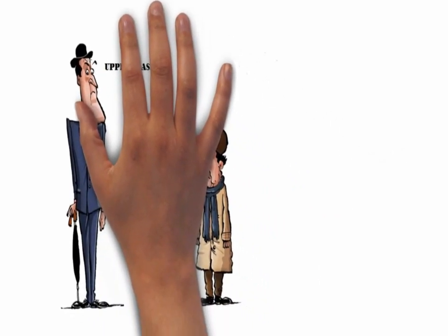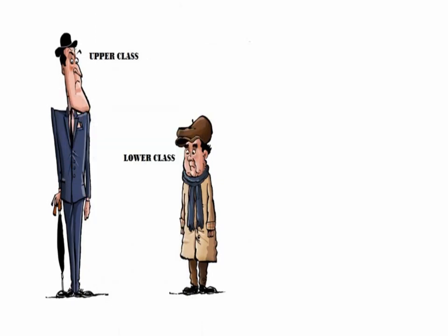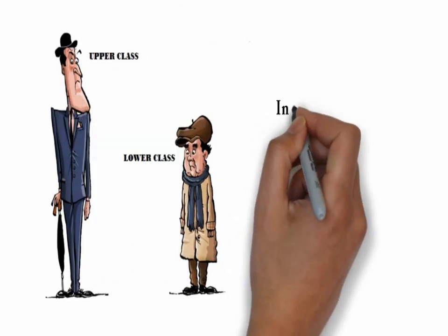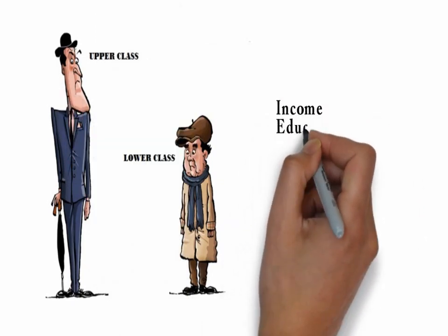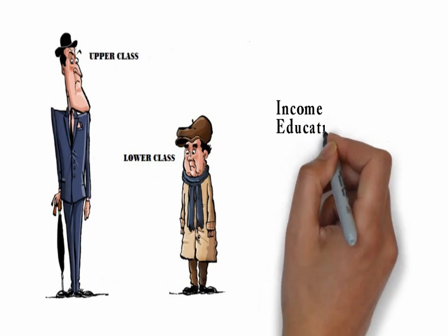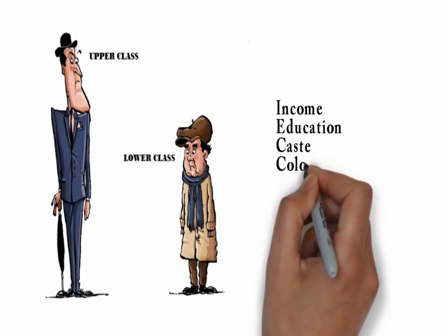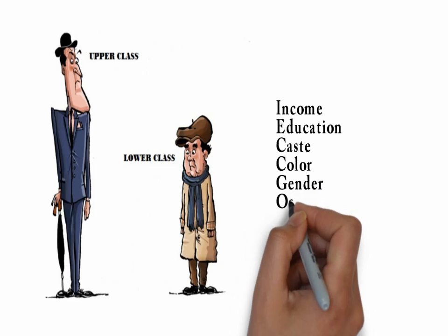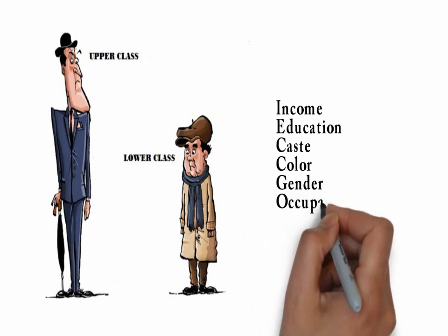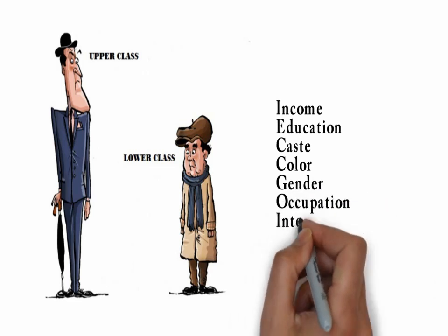Social stratification refers to the practice of classifying people as upper class and lower class on the basis of income, education, caste, color, gender, occupation, intelligence, etc.